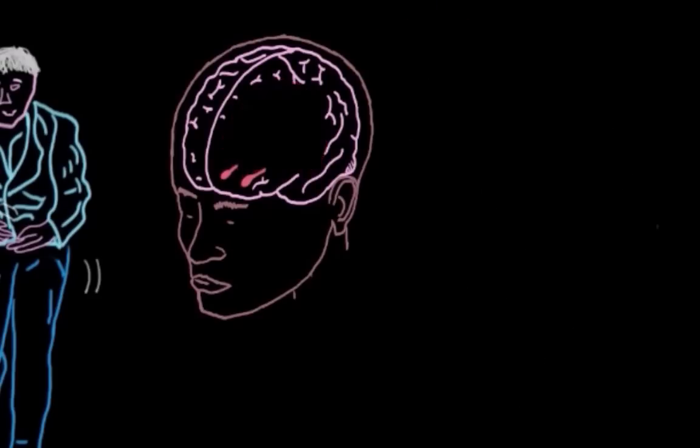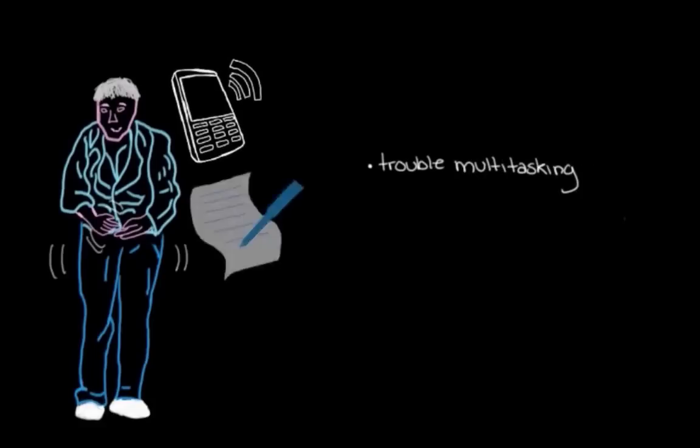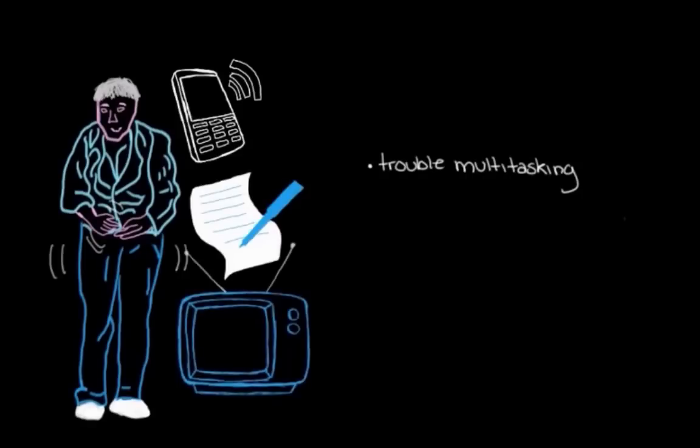And as time goes on, and more and more of these neurons are impaired and lost, the person with Parkinson's disease may have trouble doing things like multitasking. So they may find it really difficult to maybe be on the phone and write down a number at the same time while someone else in the room is watching television. These sorts of things that normally wouldn't distract them may start to really make it hard for them to accomplish a task.